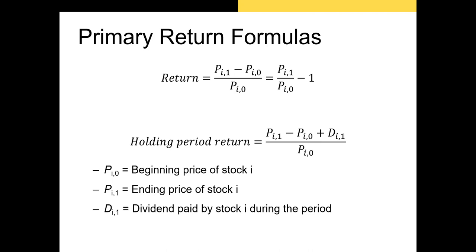Here I have the primary return formulas. You should already have these committed to memory, but if you don't, make sure you do this now. These are arguably the second and third most important formulas in the field of finance, behind the time value of money formula. Our basic return formula is simply the price at the end of the period minus the price at the beginning, all divided by the price at the beginning. We often use this formula when we don't have any income during the investment period.